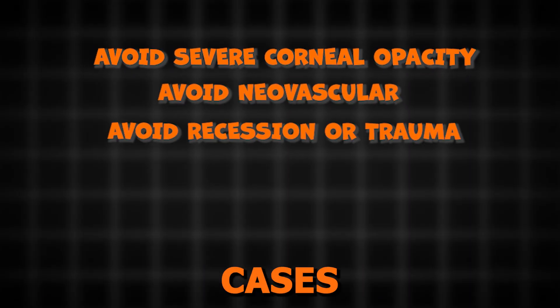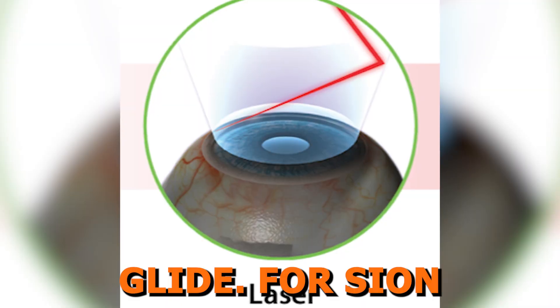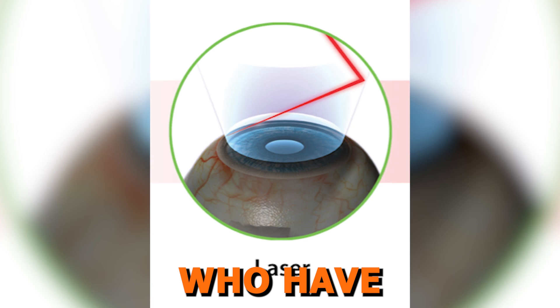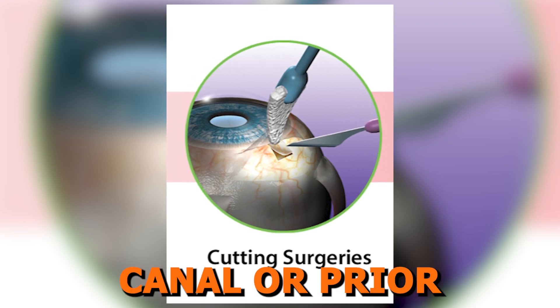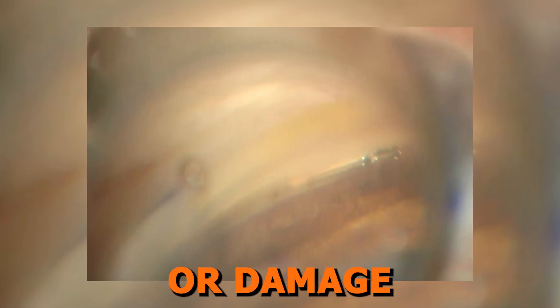However, in some cases, goniotomy procedures can be done, as mentioned with the Trabectome and the KDB Glide. For Scion, due to its design, there is also contraindication in patients who have had previous argon laser trabeculoplasty, ab interno devices implanted in or through Schlemm's canal, or prior incisional glaucoma surgeries including trabeculotomy or goniotomy, as one may not be able to pass the device through Schlemm's canal if there is any distortion or damage from those procedures. For the GATT and Omni, these contraindications and cautions also apply, in addition to not using these devices in quadrants with previous MIGS implants.